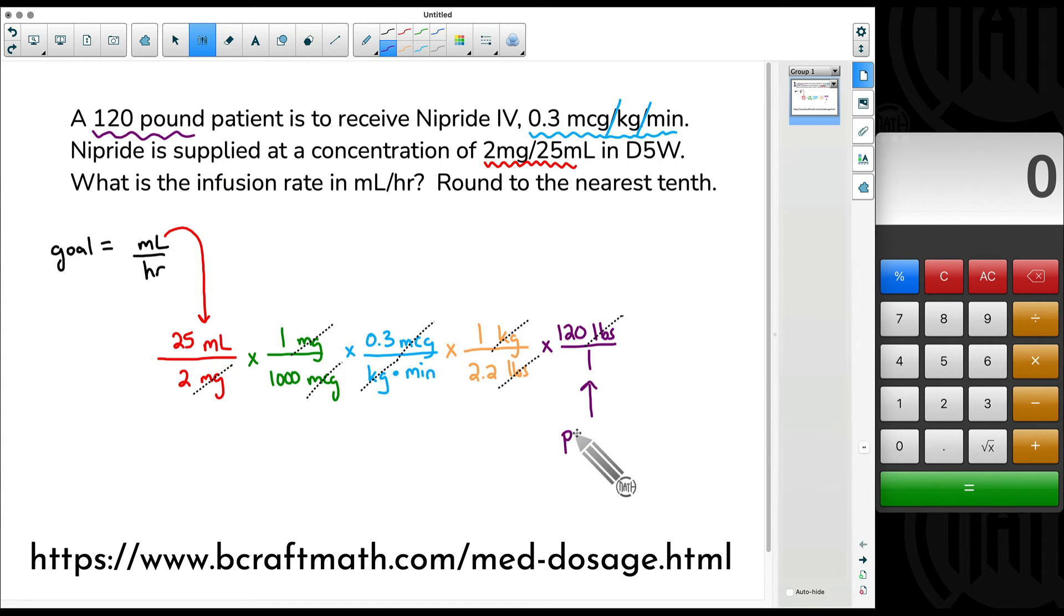What does this 1 stand for? This 1 stands for the one patient. And we don't need to include that word in our dimensional analysis, but I like to show what that 1 truly represents. It's more of a placeholder, but the 120 pounds is our one patient.